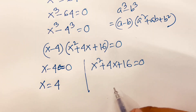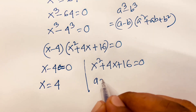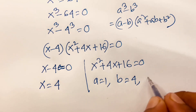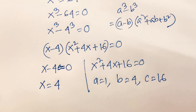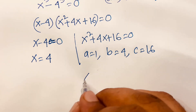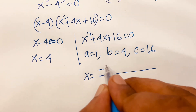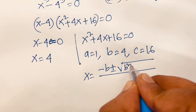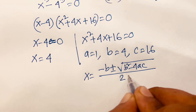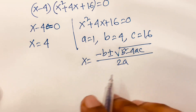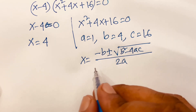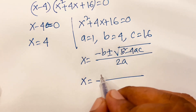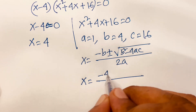From the first factor, x equals 4. For the quadratic x squared plus 4x plus 16 equals 0, we identify a equals 1, b equals 4, and c equals 16. We apply the quadratic formula: x equals minus b plus or minus square root of b squared minus 4ac, over 2a.